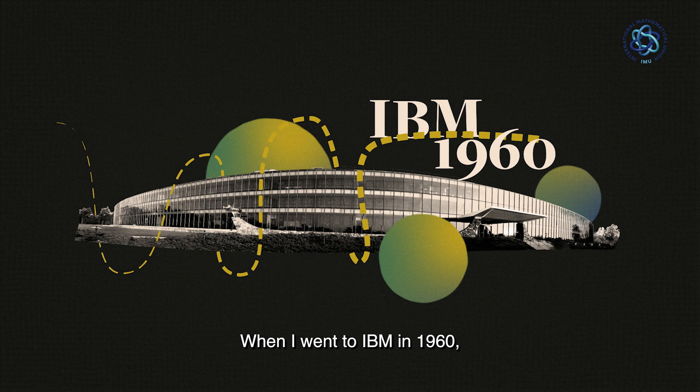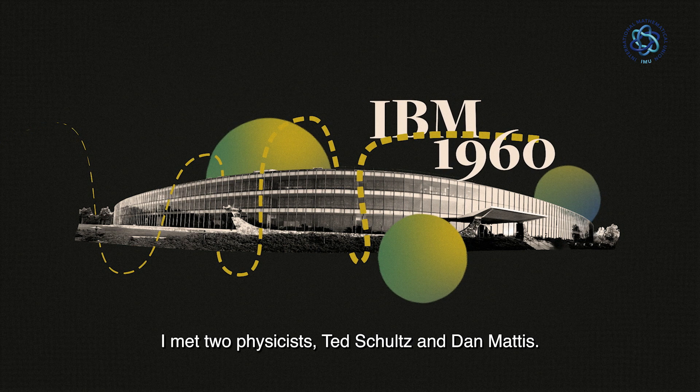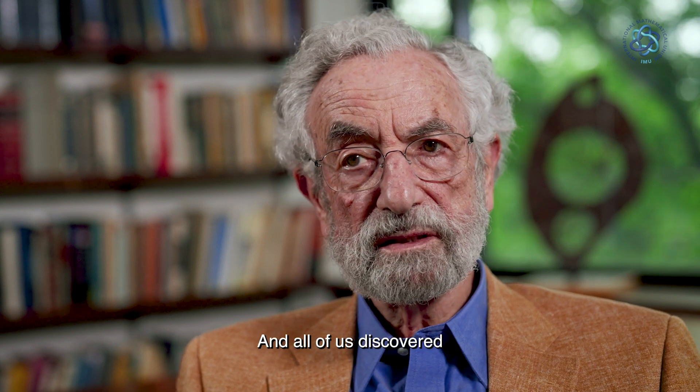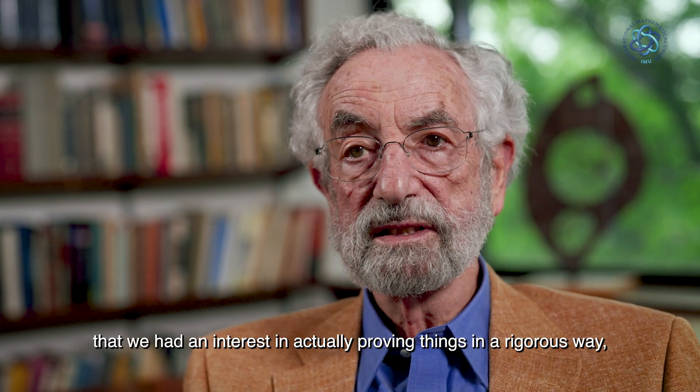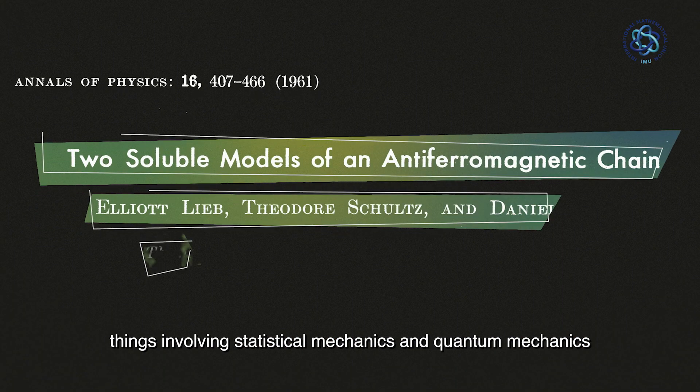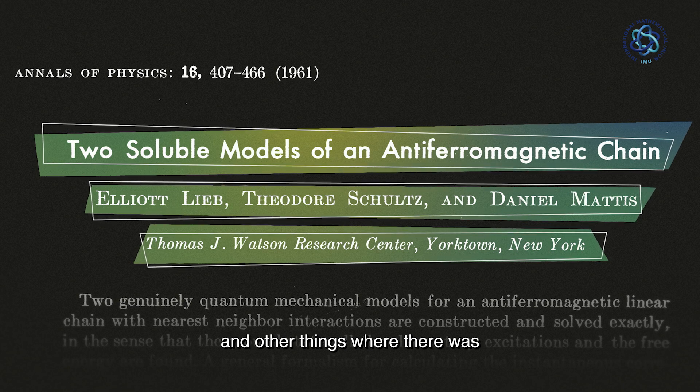When I went to IBM in 1960, I met two physicists, Ted Schultz and Dan Mattis, and all of us discovered that we had an interest in actually proving things in a rigorous way, things involving statistical mechanics and quantum mechanics and other things where there was a high mathematical component.